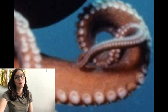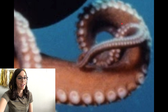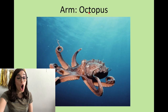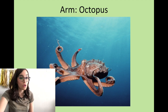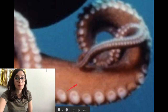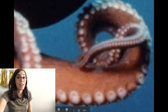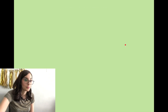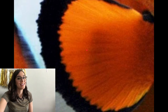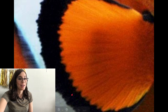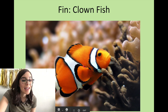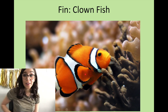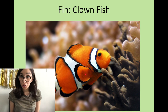You guys know what this is — we read the Magic Treehouse book! It is an arm of an octopus, one of the tentacles. We know they use those little suction cups to stick on to things and they are so strong. And I recognize this too — that was the clownfish's fin. Fish need their fins to help swim underwater.